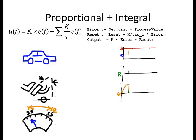This decreases the error, and this smaller error contributes a small increase to the reset register. The new reset register value is added to the output with the current proportional component, which results in the output decreasing and the car slowing down, which again increases the error. Over time, the proportional component oscillates as it did before, but the integral component continues to rise as long as the process variable is below the set point. The reset register will accumulate enough so that the car speed reaches the desired set point — and at that point, the proportional component has been reset to zero, which is likely the origin of the term.